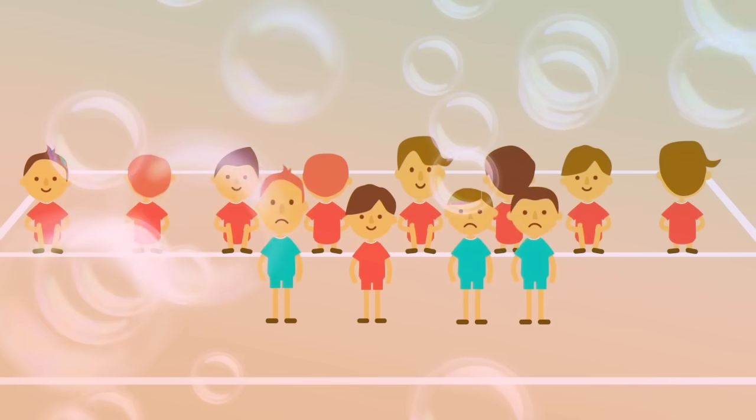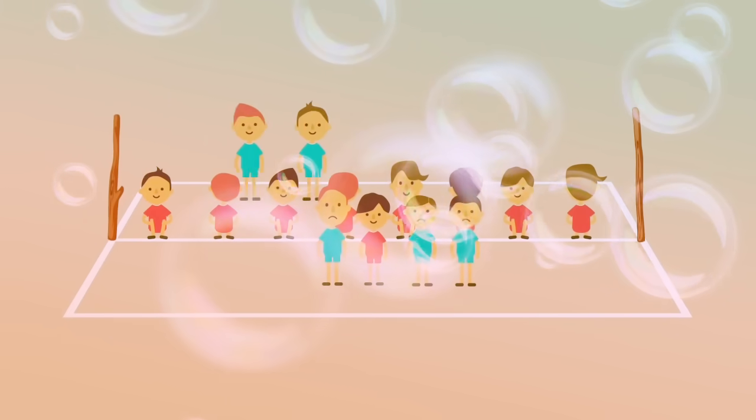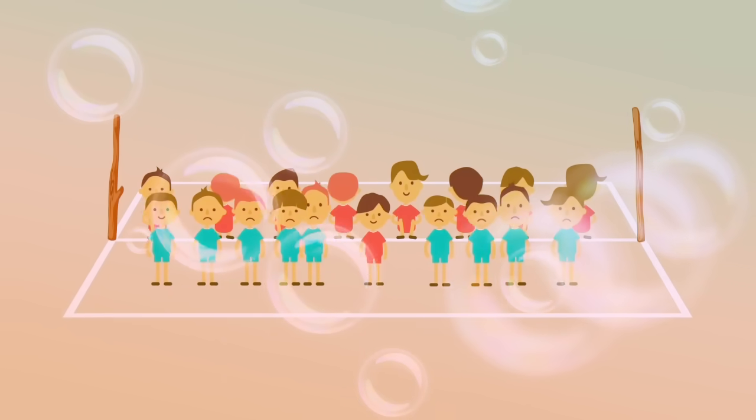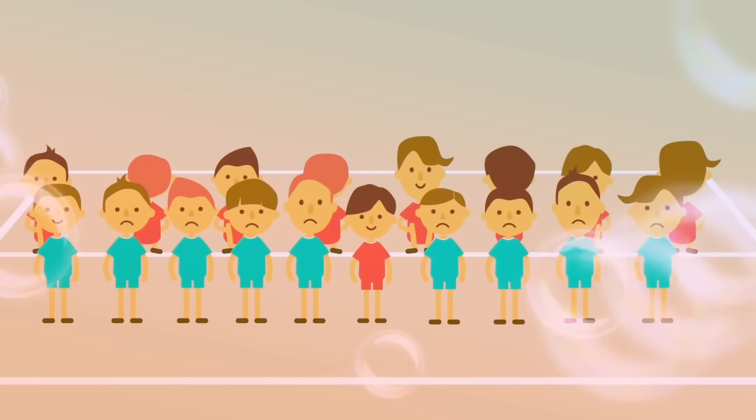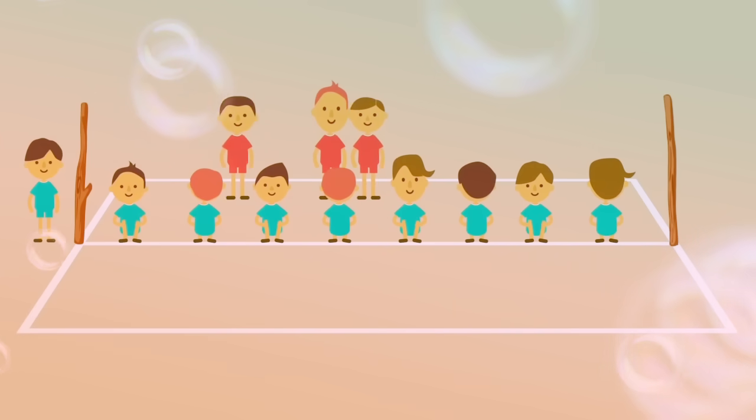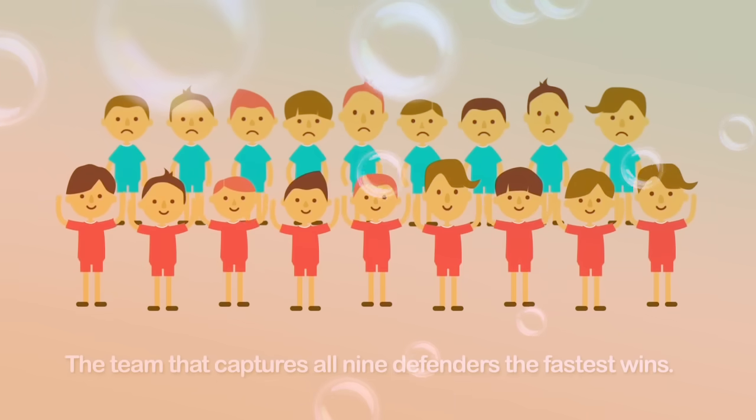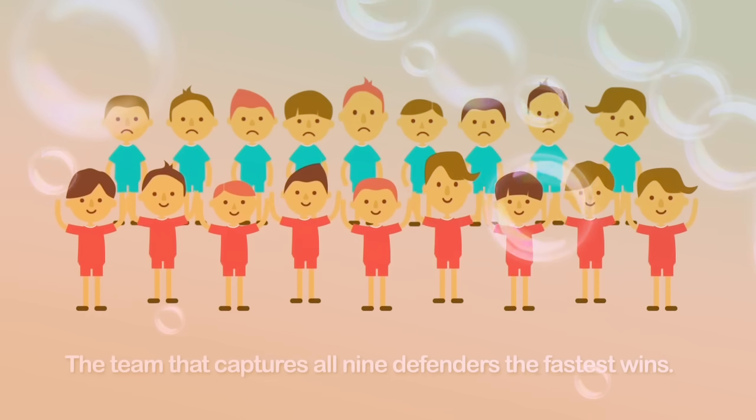When all three defenders are captured, three more defenders enter the court. The game ends when all nine defenders have been captured. Then the teams' roles are reversed. The team that captures all nine defenders the fastest wins.